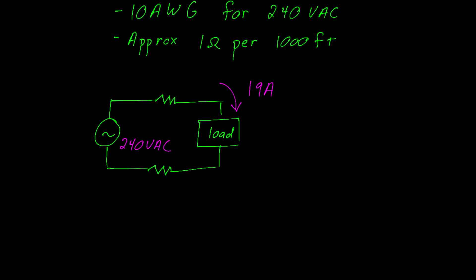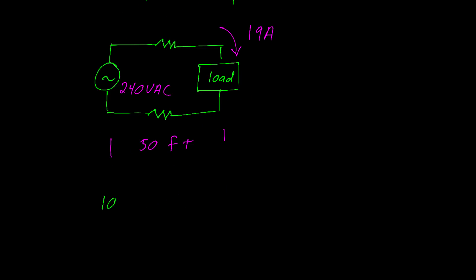And for our purposes we'll assume that the length is 50 feet. Notice that we have the two resistors there, each one is 50 feet long, therefore we have 100 feet of wire total.